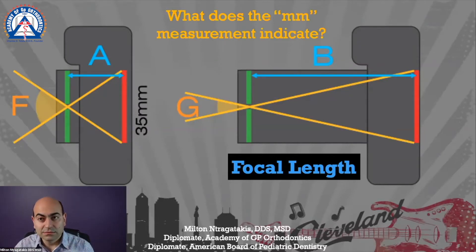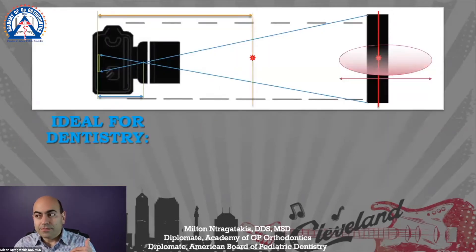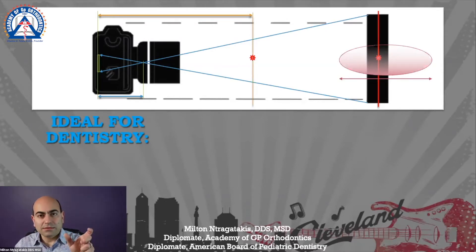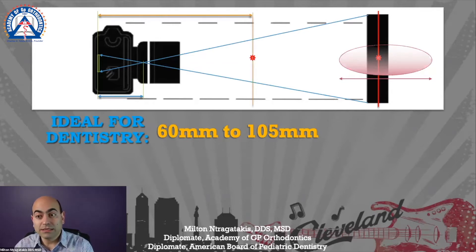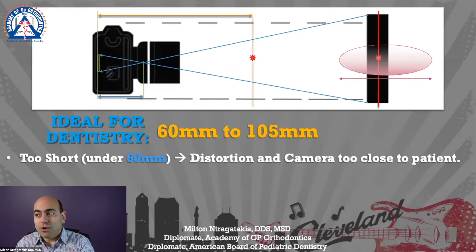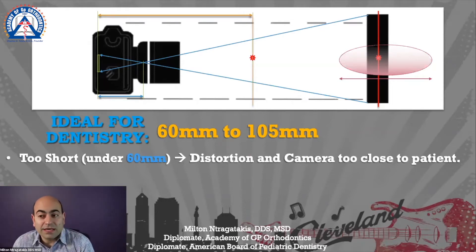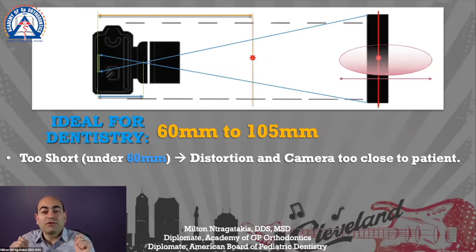So what's the ideal focal length for dentistry? The focal length dictates how far or close you're going to be to the patient. 60 to 100 is the ideal range. If you don't have any exposure to dental photography and you want to go out and buy a new lens, stay between 60 and 100. If you go too short — under 60, like a 50, 40, or 30 millimeter lens — you'll introduce a lot of distortion, because with a shorter focal length you have to be closer to the patient to compose your images.